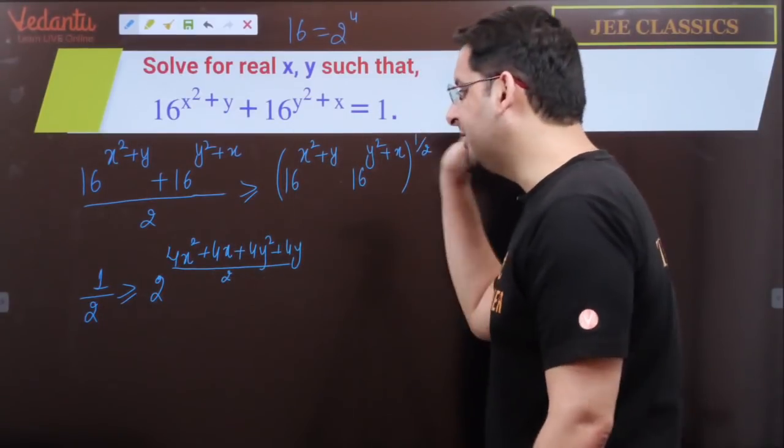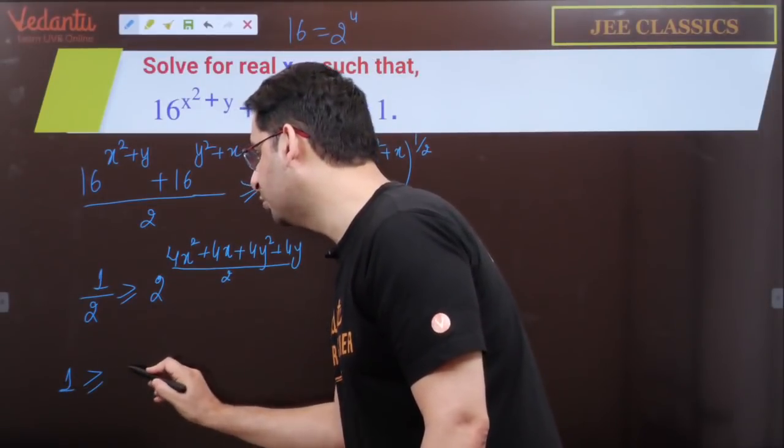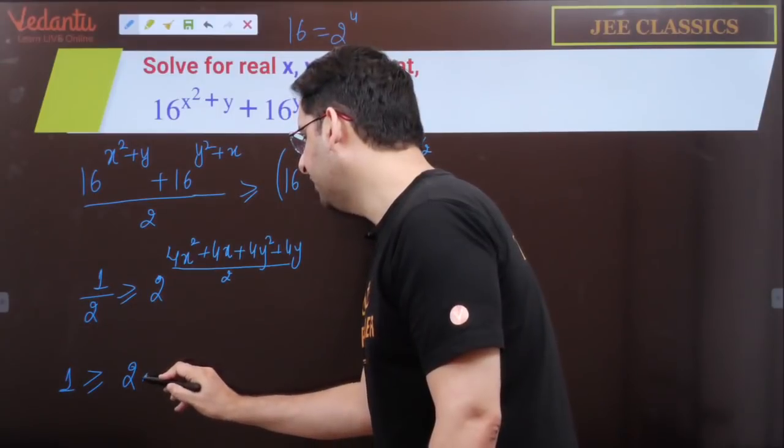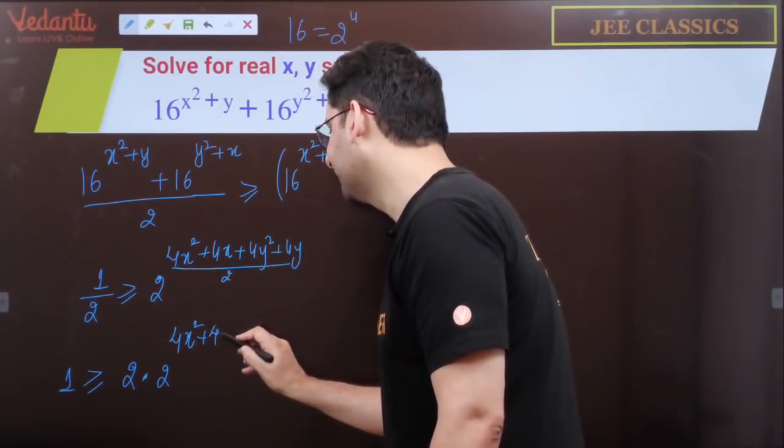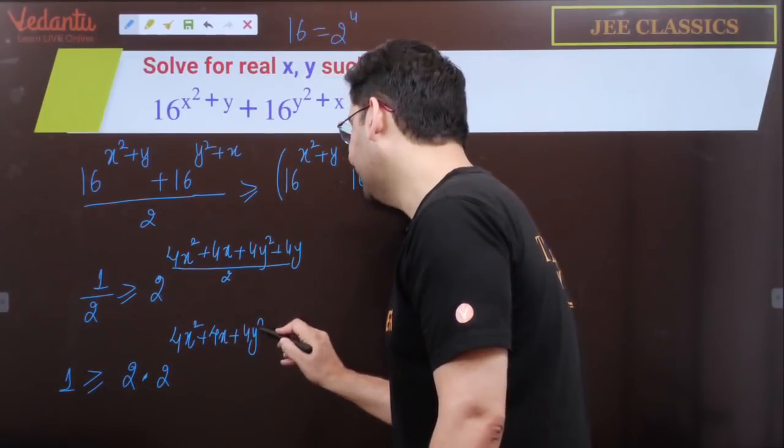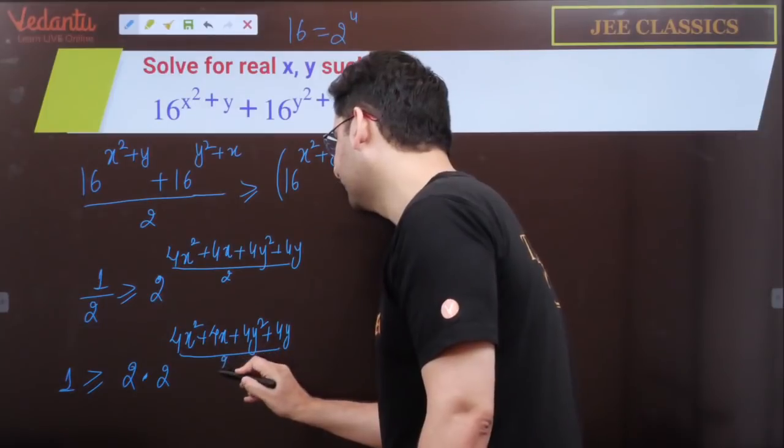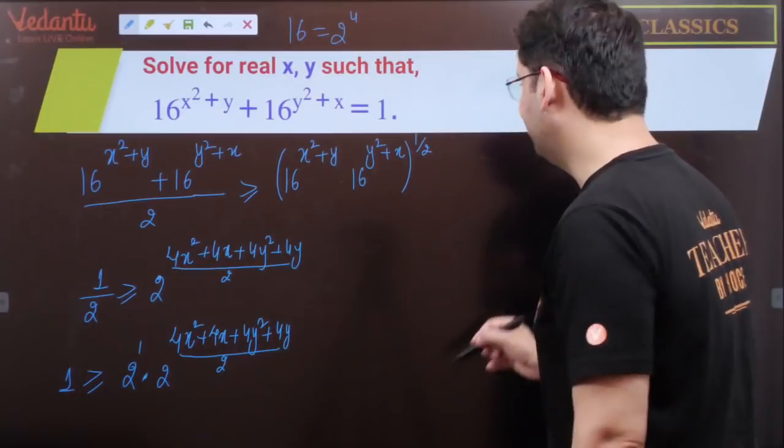If I cross multiply 2, this becomes 1 ≥ 2 × 2^[(4x²+4x+4y²+4y)/2].